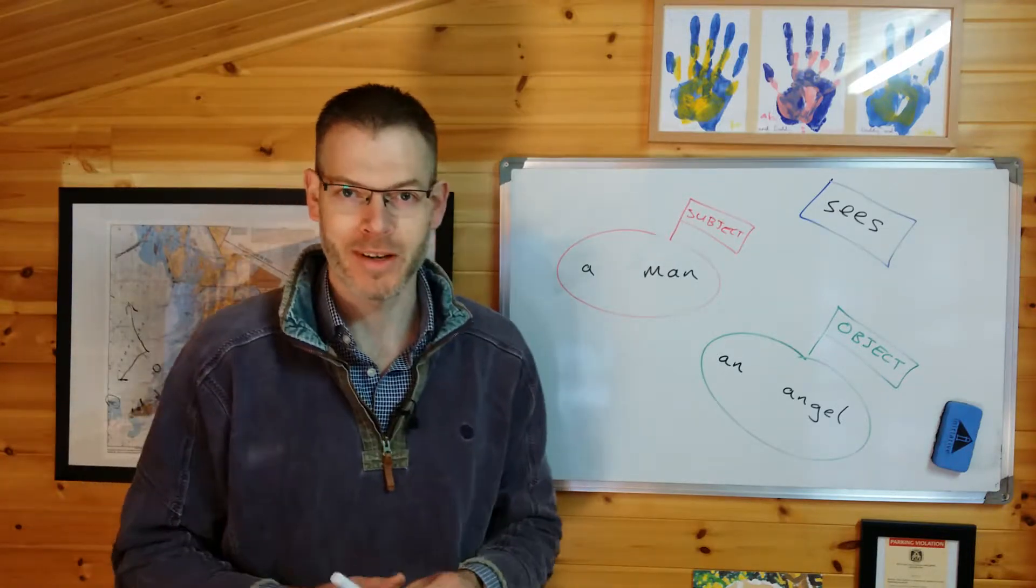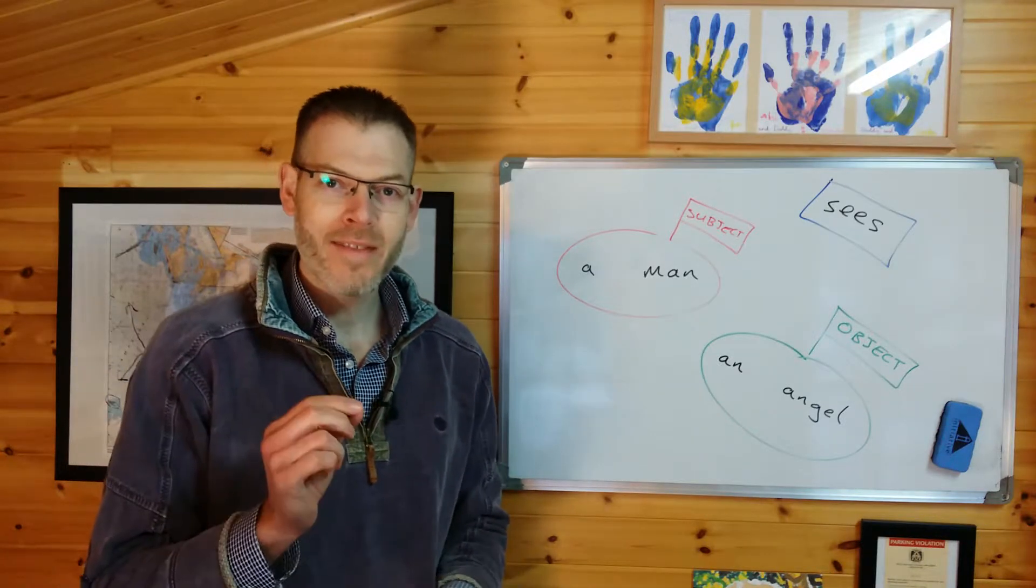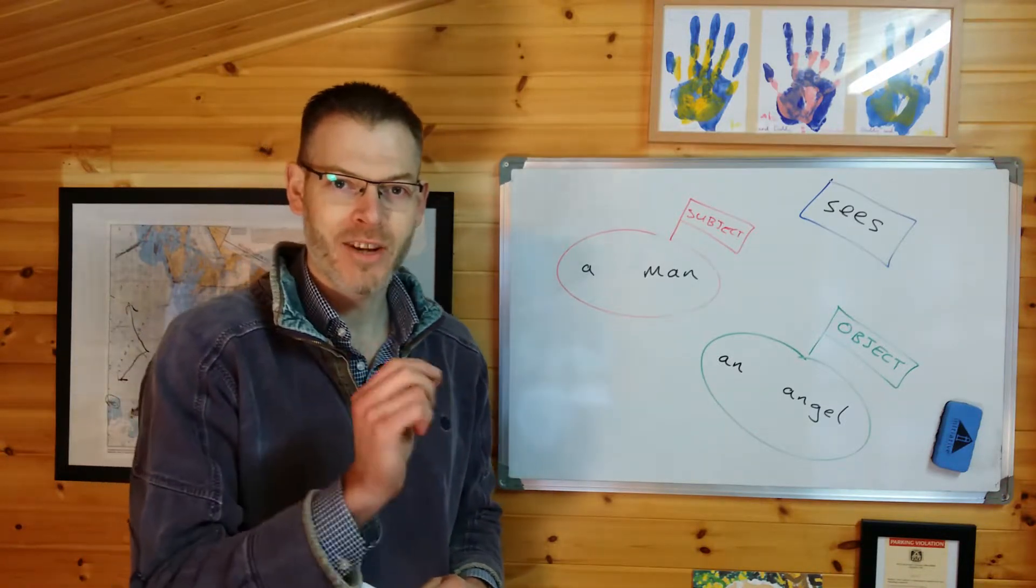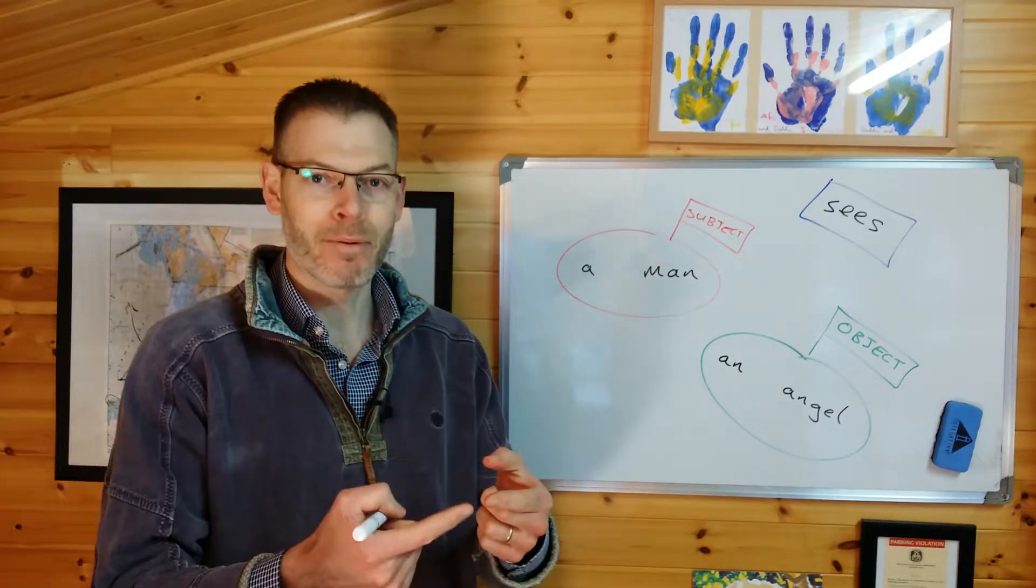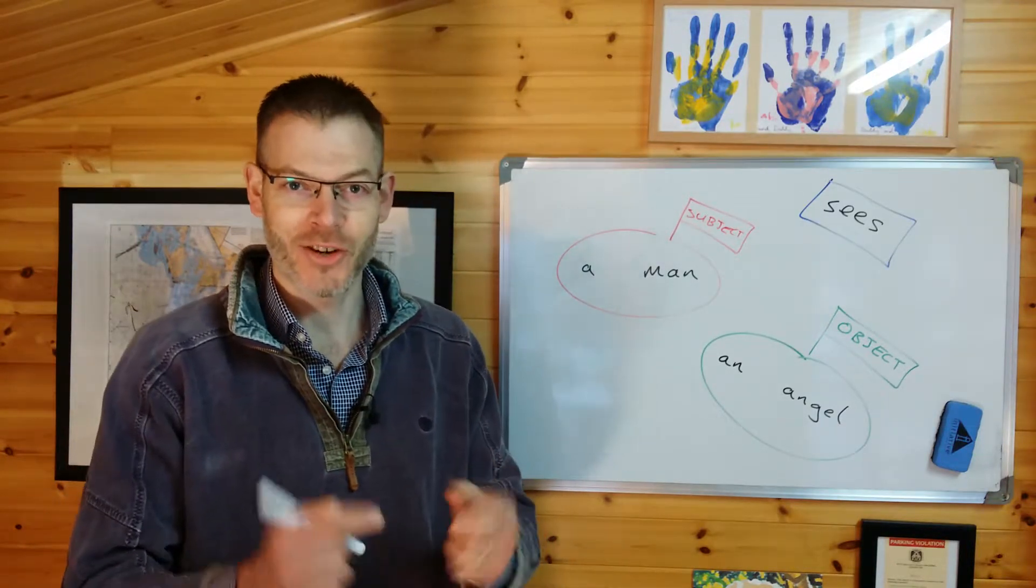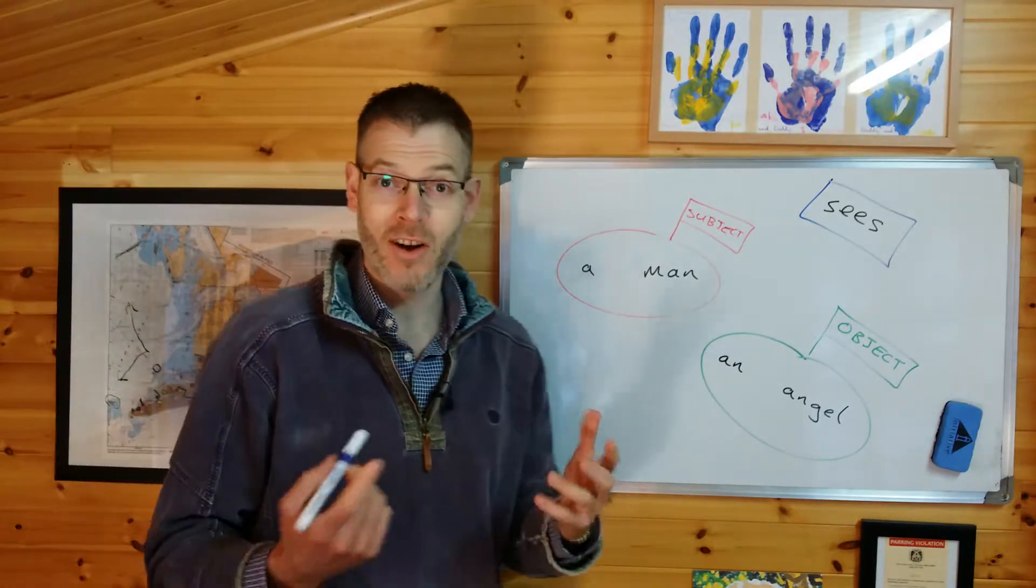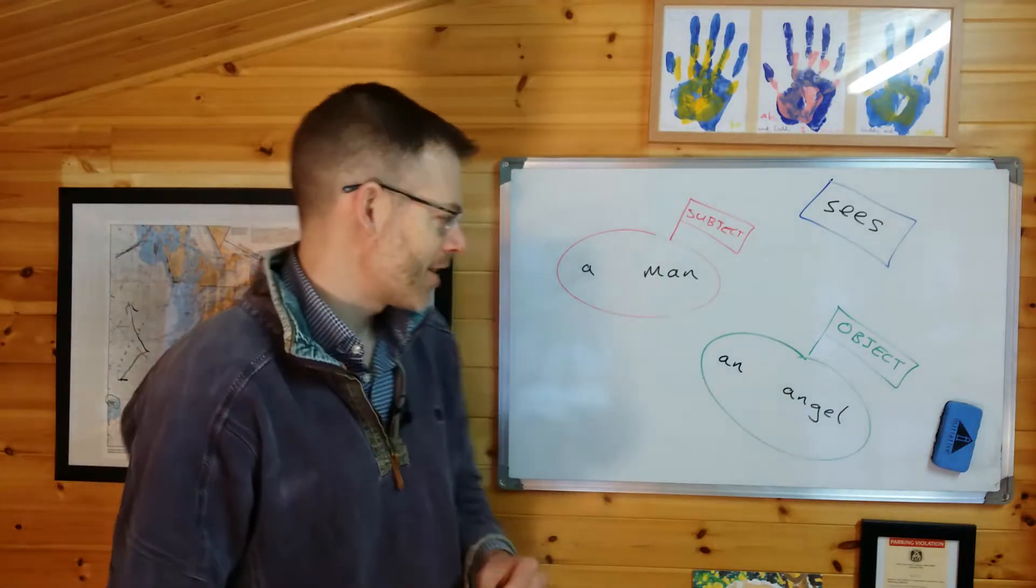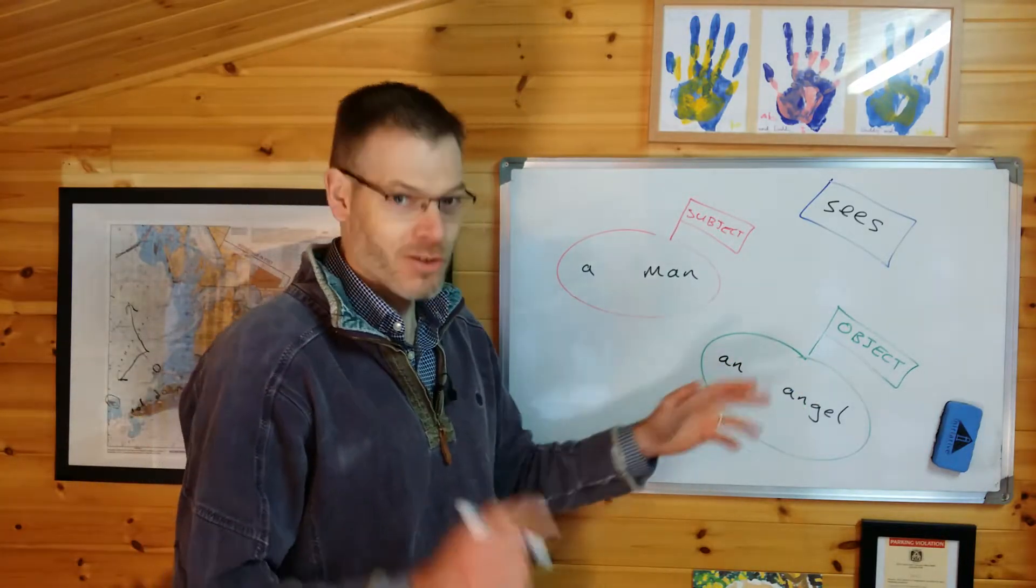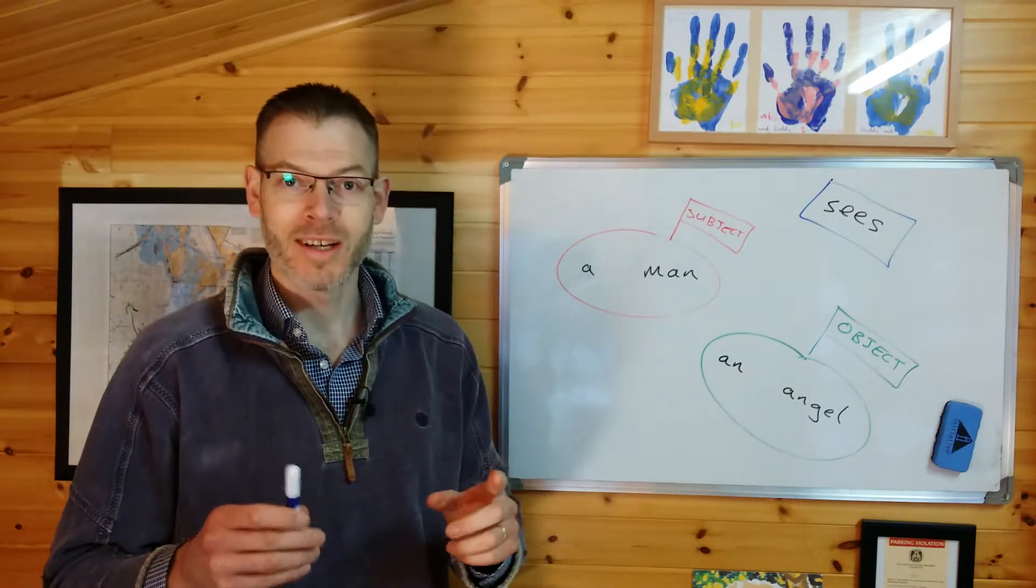Now, here's the crucial point. That's how Greek works. In Greek, the way that you tell what is the subject of the verb is because there is a little label attached to it that tells you this is the subject. Similarly, the way that you know what's the object of a verb is there's a little label attached to it which tells you that it's the object.